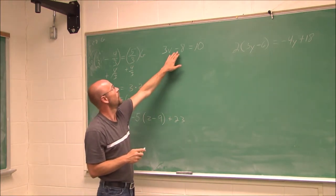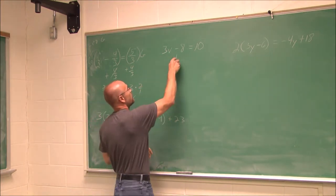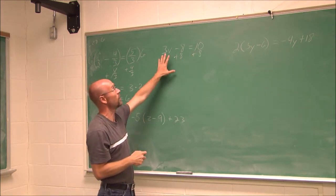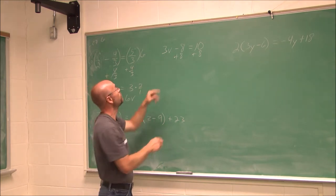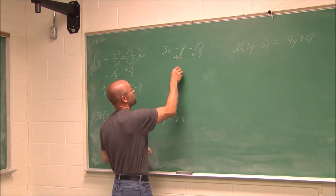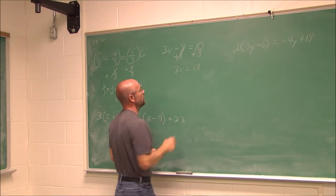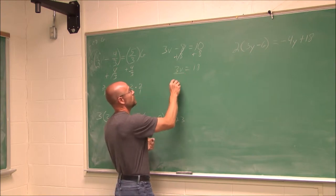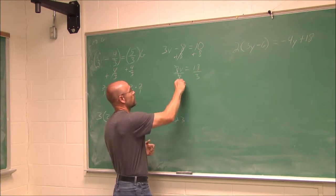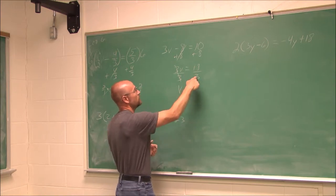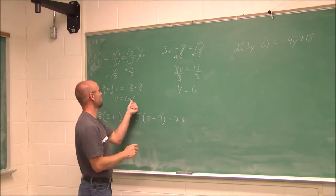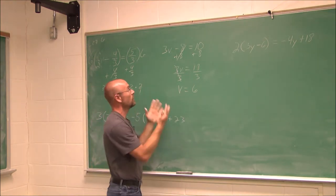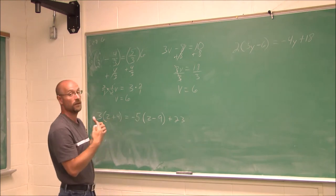Let's see what happens. I want to undo this math, so I'm going to add 8. This looks very different than before, but there are no fractions because we used the LCD. This gives 3v equals 18. We can undo the multiplication using division — 18 divided by 3 is 6, so v equals 6. We got the exact same answer either way.